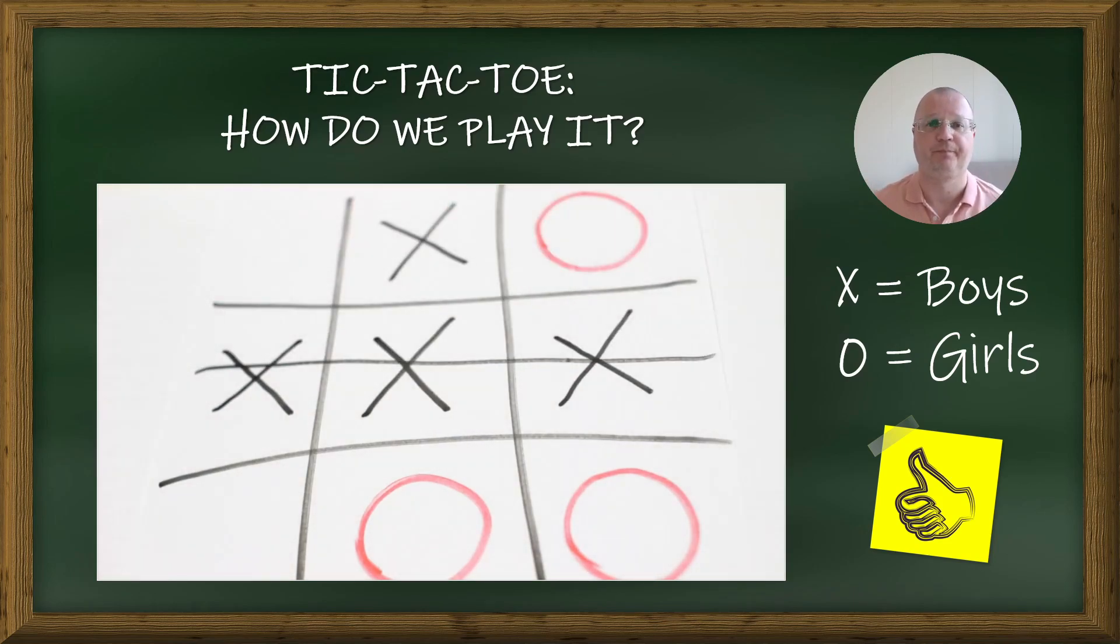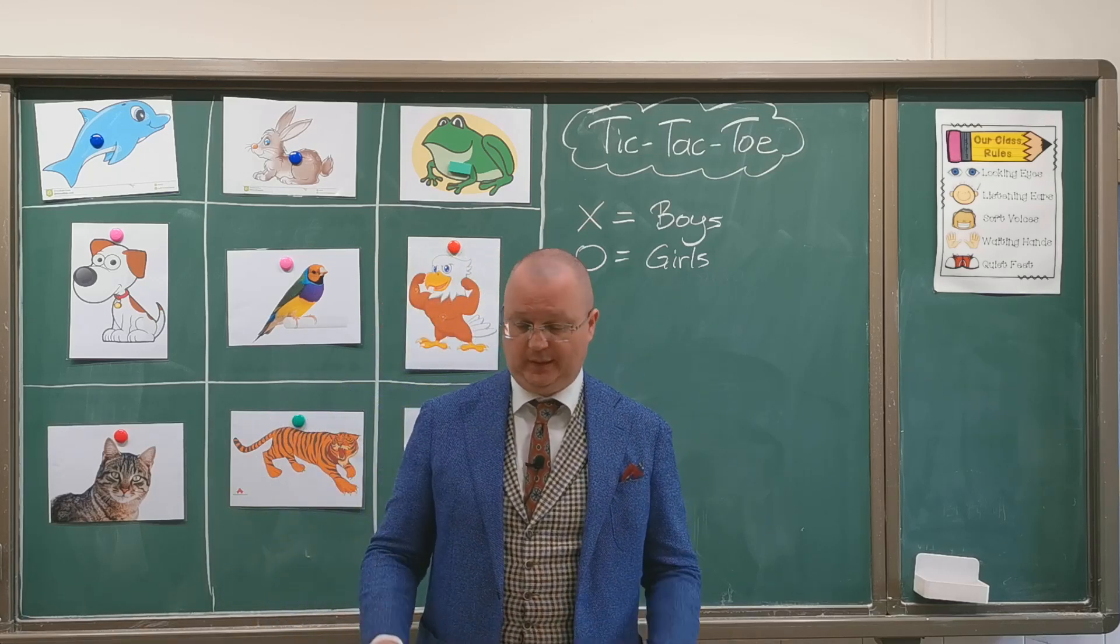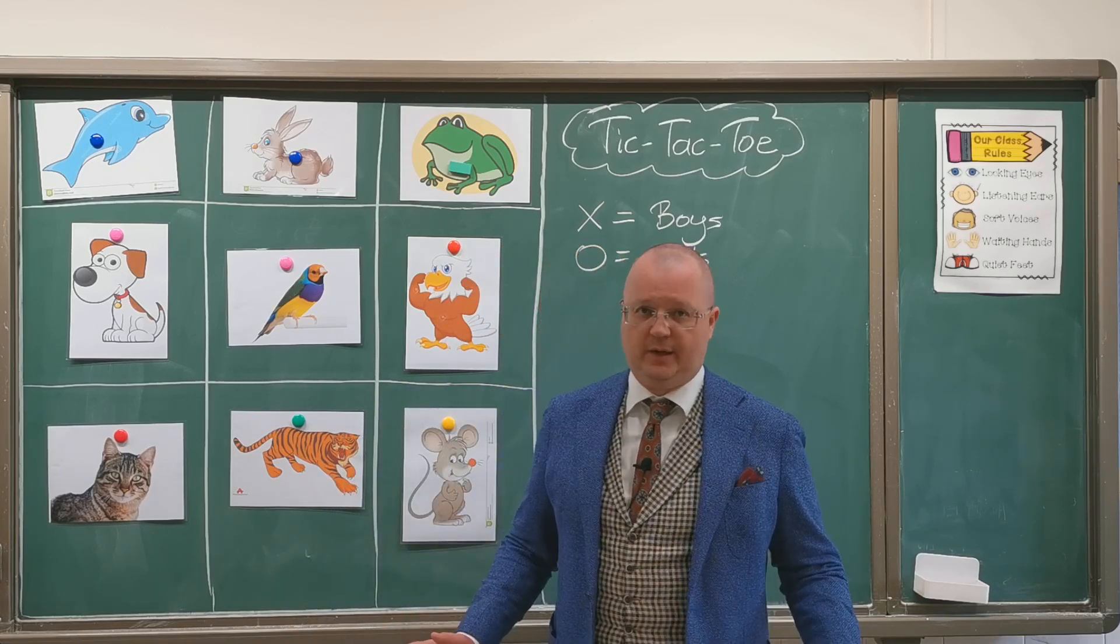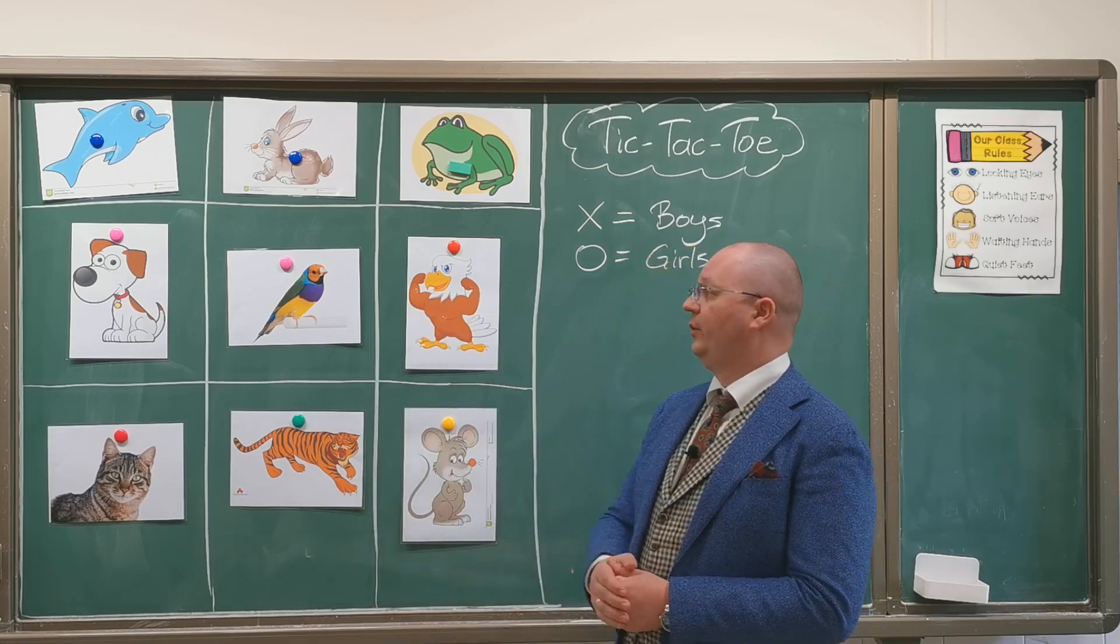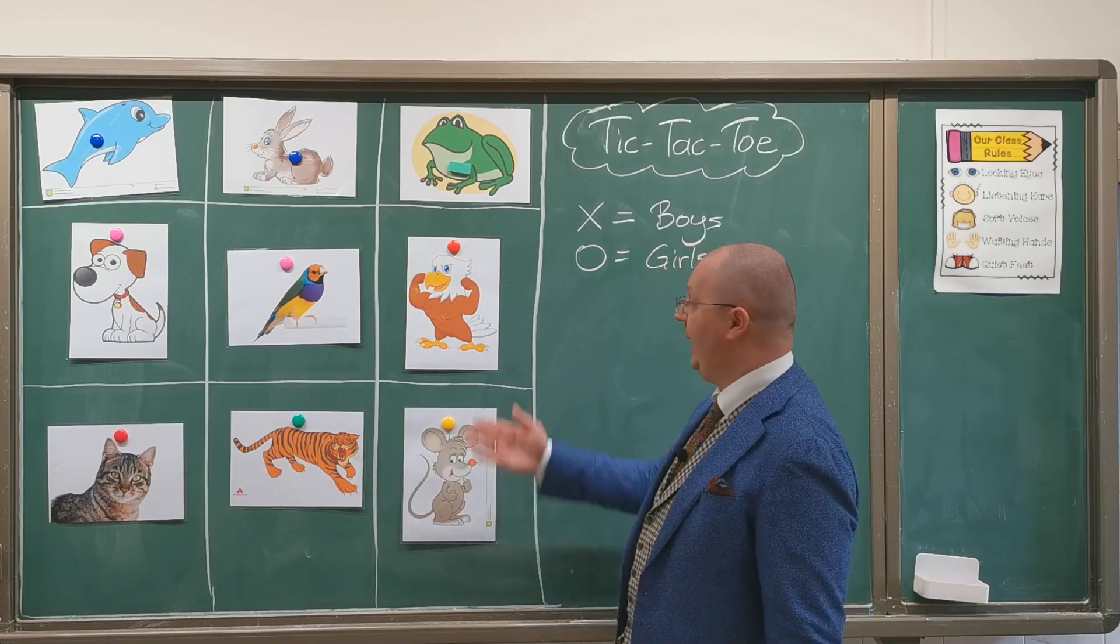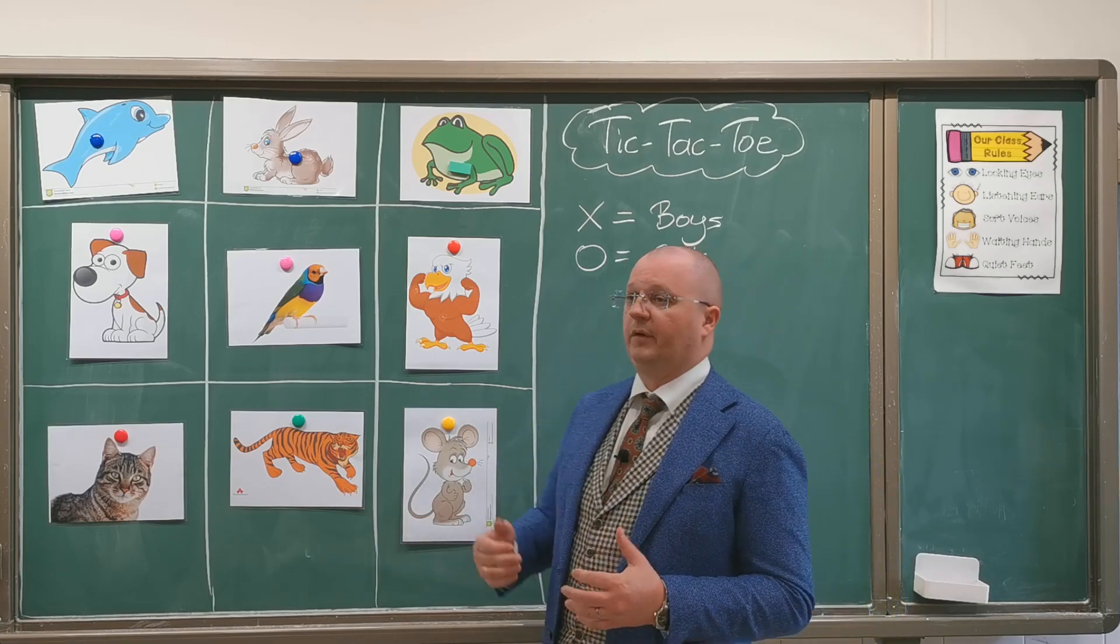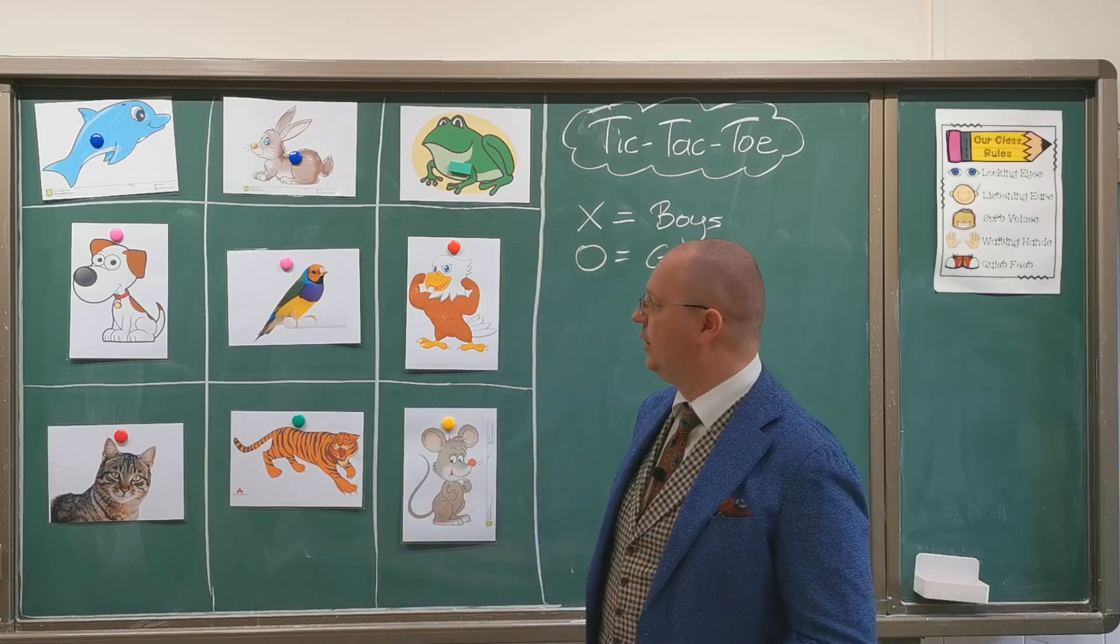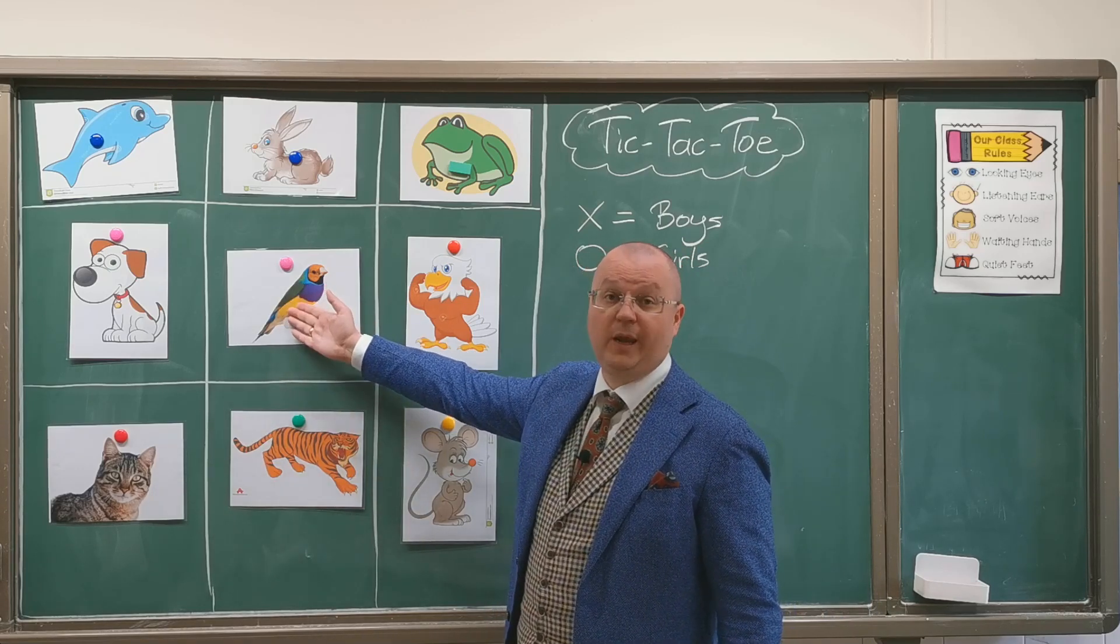It's a very simple game, but how can we adapt it to an English language classroom? There are many scenarios here. For example, you can use flash cards. I have a very big three by three grid here and I have flash cards. The simplest way to play it, for example if you're teaching kindergarten students or grade one students, all they need to do is say or name the animal here.